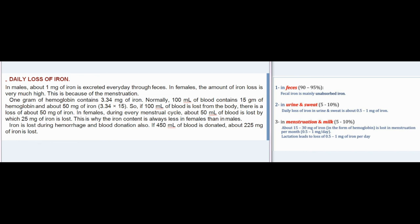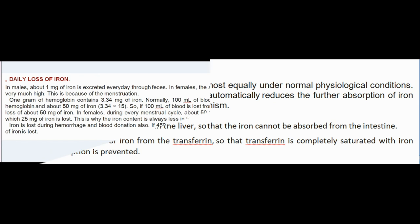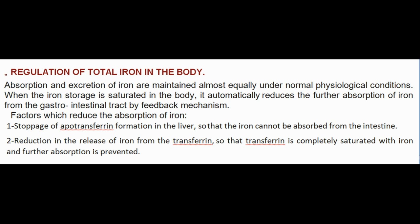In females, during every menstrual cycle about 50 mL of blood is lost, by which 25 mg of iron is lost. This is why iron content is always less in females than in males. Iron is also lost during hemorrhage and blood donation — if 450 mL of blood is donated, about 225 mg of iron is lost.